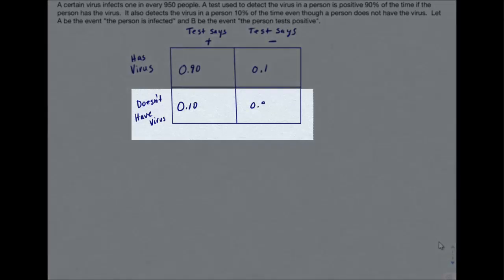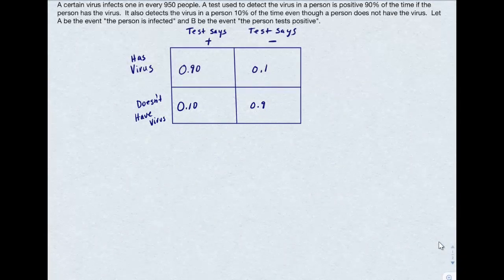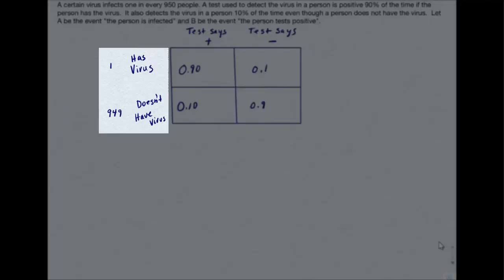Likewise, 90% of the time the test will say a person does not have the virus, because 10% of the time the test will say a person without the virus is actually positive. So that takes care of the 90% and the 10%. Now we have the fact that we've got 950 people we're talking about. One person has a virus out of every 950 people, which means 949 people do not have the virus for every single person that does.